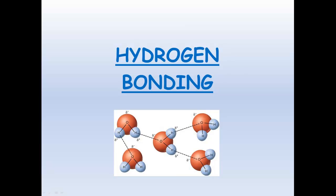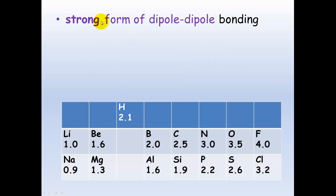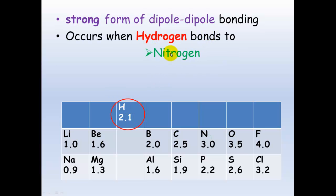Hydrogen bonding. Hydrogen bonding simply is just a strong form of a dipole-dipole bond, and it occurs when hydrogen bonds to either nitrogen, oxygen, or fluorine.